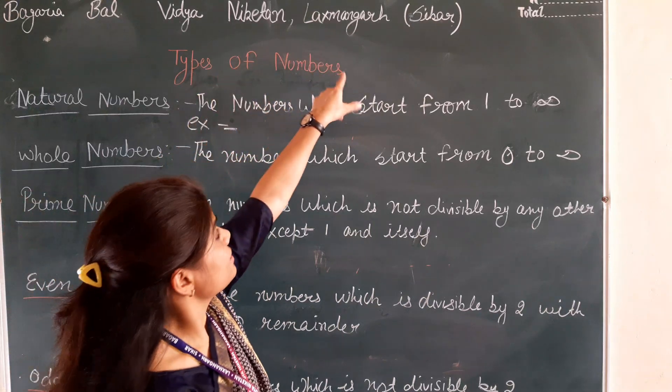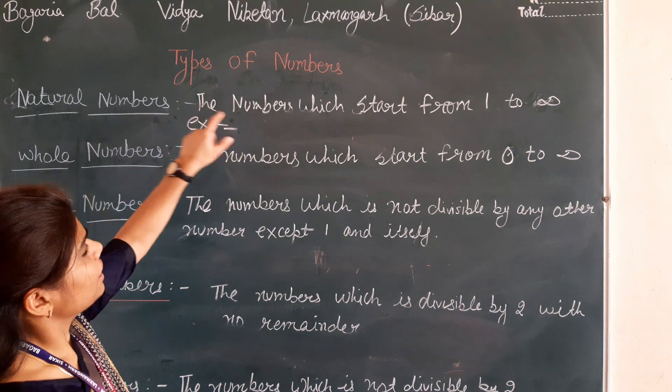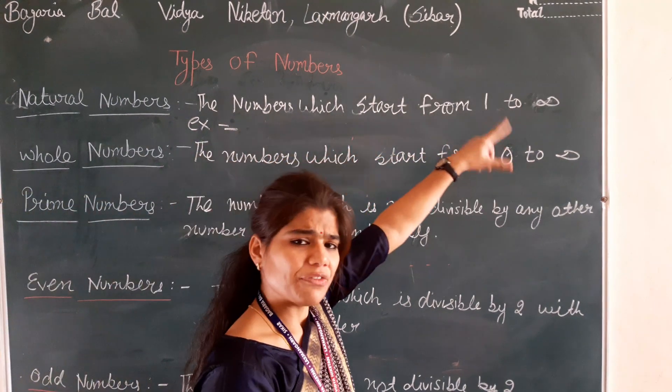Friends, now we will do types of numbers. Types of numbers first, natural numbers. Natural numbers - the numbers which start from 1 to infinity.